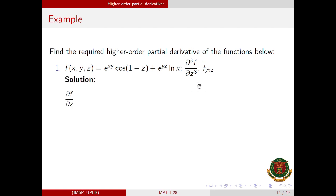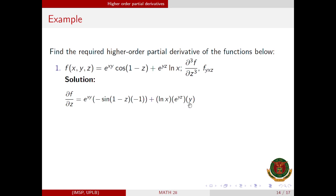The partial derivative of f with respect to z: e^(xy) is a constant when differentiating with respect to z, so we copy that. Then cosine(1 − z) gives negative sine(1 − z); by the chain rule, the derivative of (1 − z) with respect to z is −1. Plus, ln(x) is a constant, so copy. The derivative of e^(yz) is e^(yz) times y by the chain rule, since the derivative of yz with respect to z is just y. Simplifying, we have this expression.